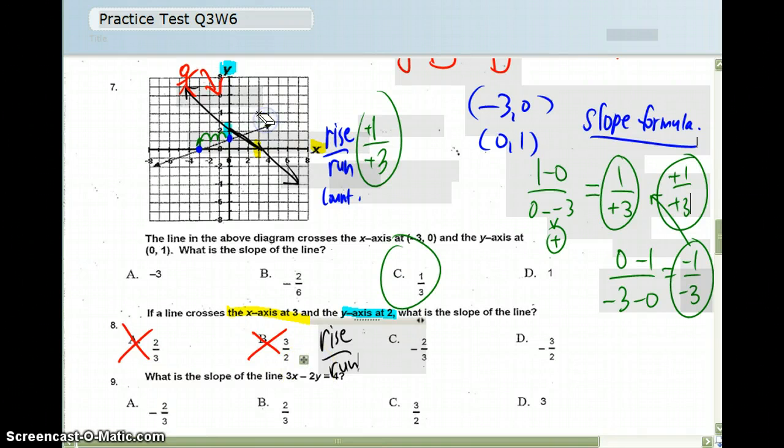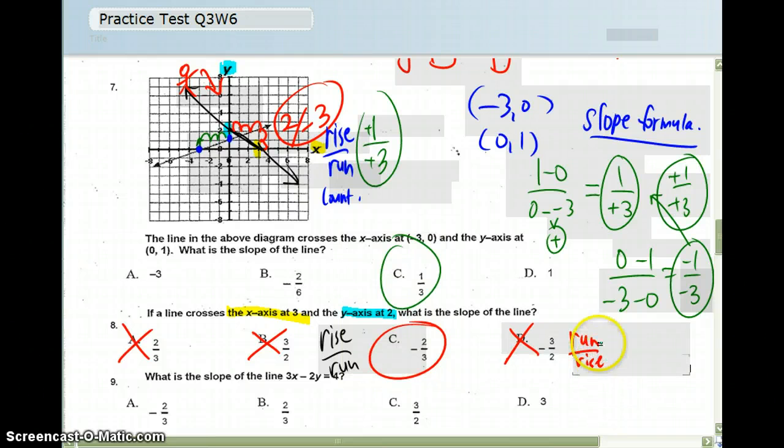If I count the rise, I'm going to count 1, 2 up, and then 1, 2, 3 to the left. That's going to give me a negative 3, because I went to the left. So that's how I get the answer C. If you accidentally got D, it's because you did run, rise, and that's not what we want. We don't want run, rise. It's supposed to be rise over run, just like our song. Rise over run.